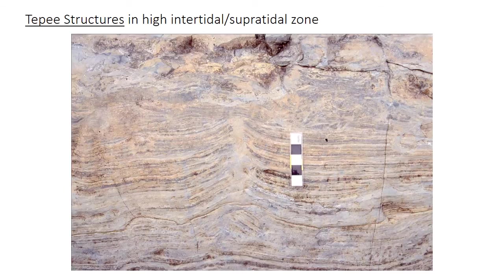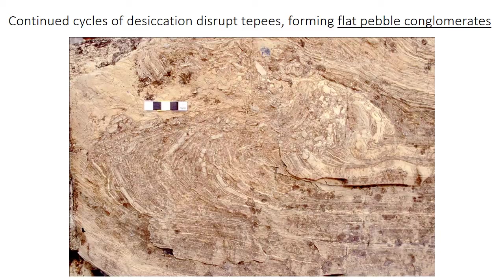Continued wetting and drying of desiccation cracks can deform the laminations upward into a V-shape, forming a sedimentary structure called a tipi structure. These are also pretty indicative of the supratidal and intertidal zones on carbonate tidal flats. If this process continues to an extreme, the tipi may grow very large and get disrupted — either by continual cycles of desiccation or by occasional storm waves that break up the lithified sediment.